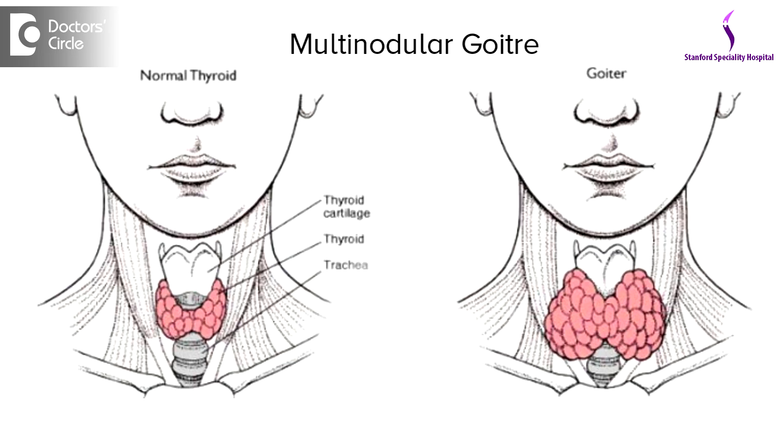As the question goes, it is regarding multinodular goiter in women. There are a couple of aspects to this. Number one is the age of the patient. It is very important because the age also decides what cycle the patient is in — in other words, whether she is in a reproductive age or a non-reproductive age. These things can decide the hormonal interface or hormonal orchestra of the body.